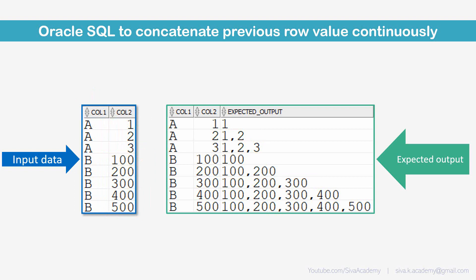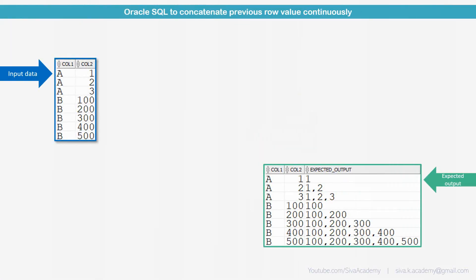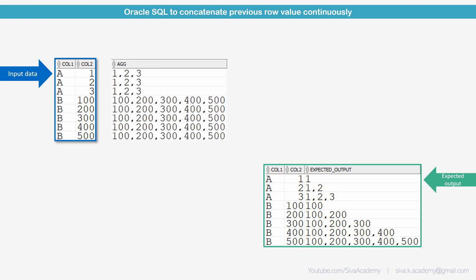Now let me explain the logic I am going to follow so that it is easy to understand when I write the SQL. First, I am going to find the concatenated list of all values — a comma-separated list under A and then under B — by using the list aggregate function as an analytical function, partitioned by column 1. This gives us 1, 2, 3 for A and 100 through 500 for B.